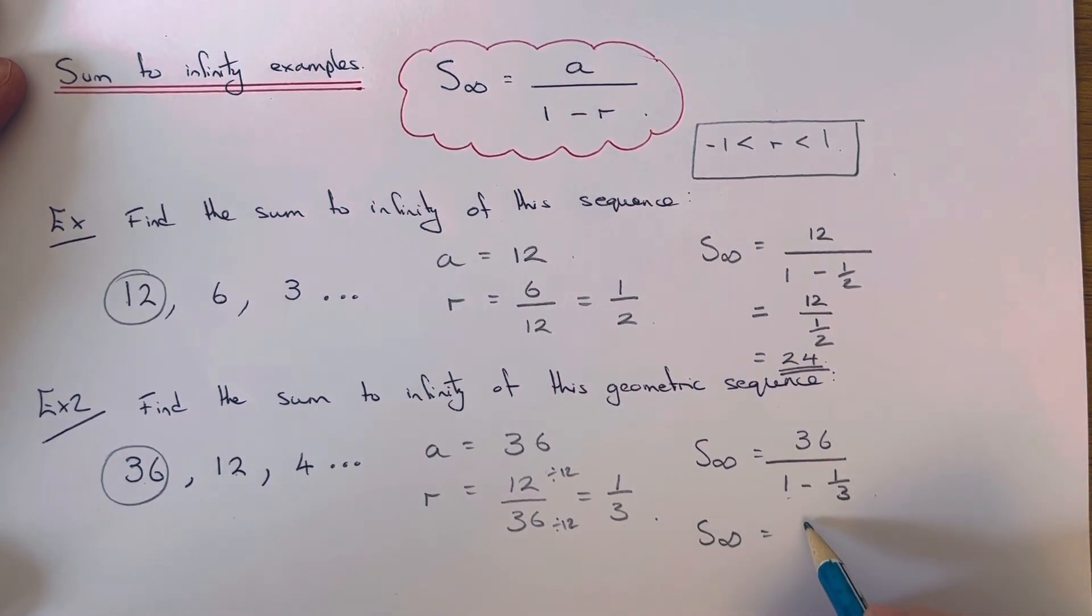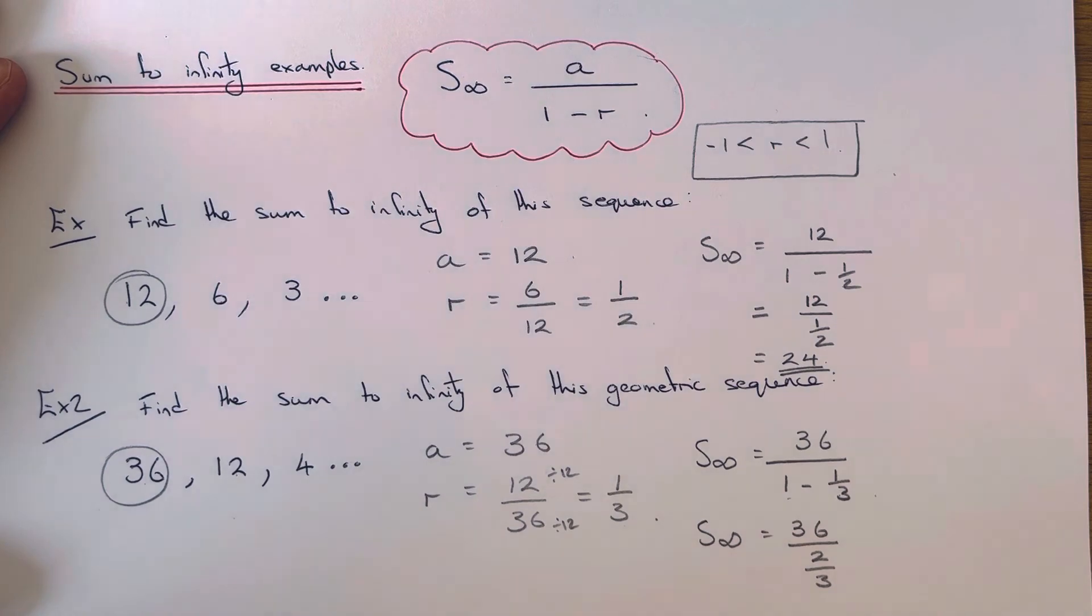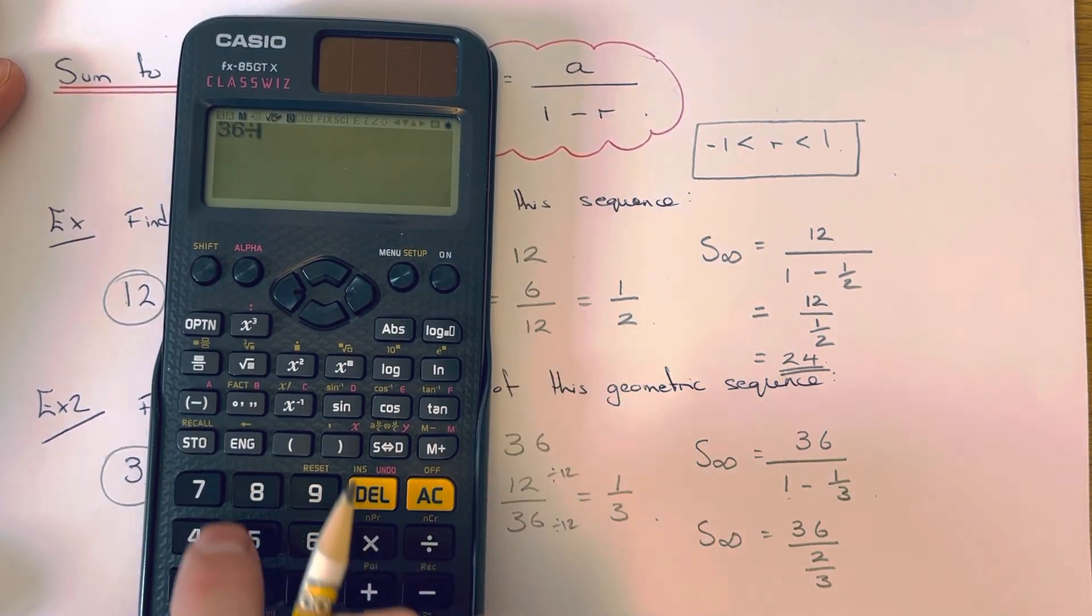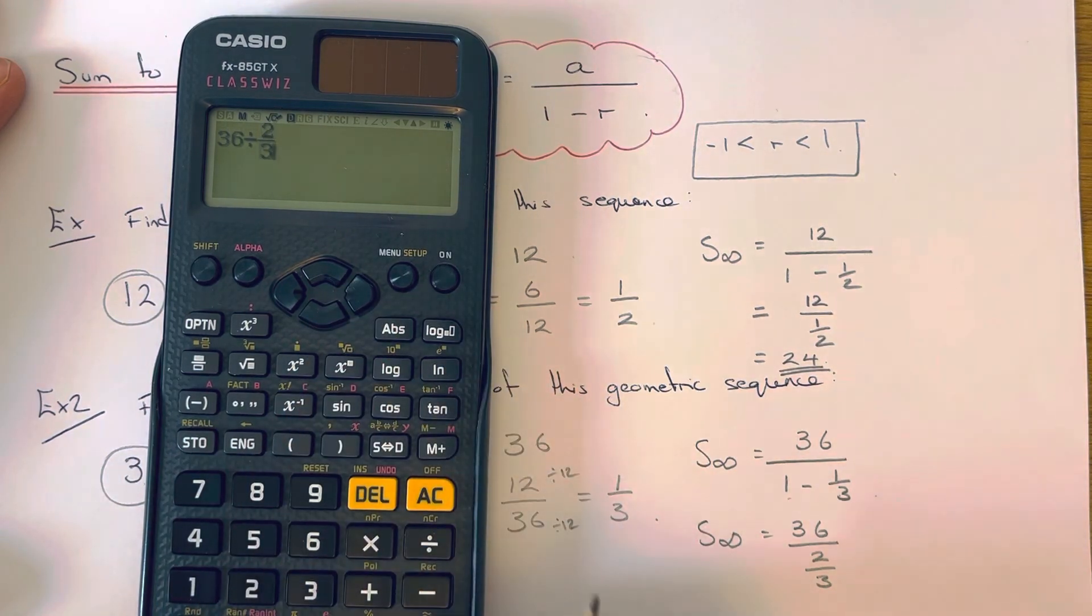So one take away a third is the same as two thirds, so we just need to work out 36 divided by two thirds, which gets an answer of 54.